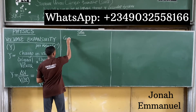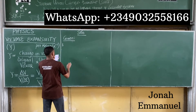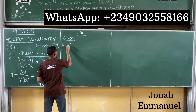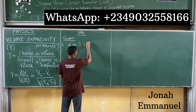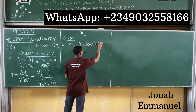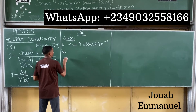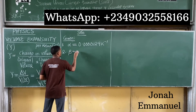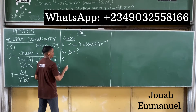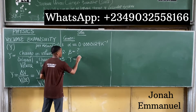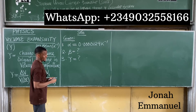Solution — list the given parameter: linear expansivity α equals 0.0000129 per Kelvin. We are asked to find β (area or superficial expansivity) and γ (volume or cubic expansivity).